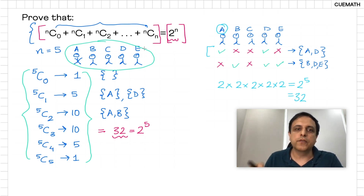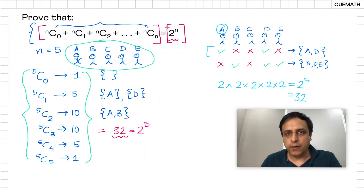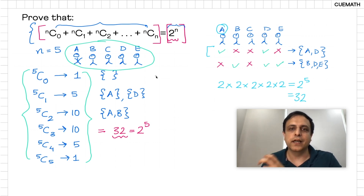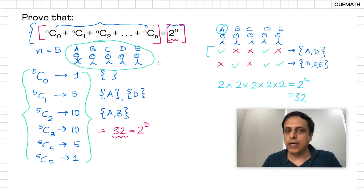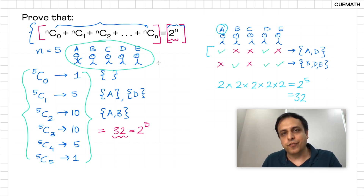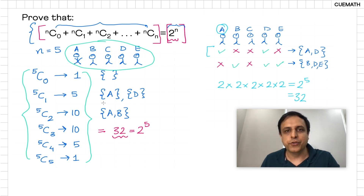So what's really happening in this binomial identity is that we are counting the same thing in two different ways. On the left side, each binomial coefficient counts the number of subsets of a certain size, and we add them all to get the total number of subsets of any possible size. On the right side, we count the same quantity differently — two decisions per object, N objects — giving 2 to the power N. I love this argument; it's very elegant and beautiful, and this is why I love combinatorics as a topic.